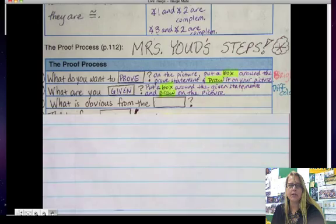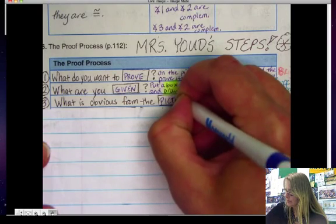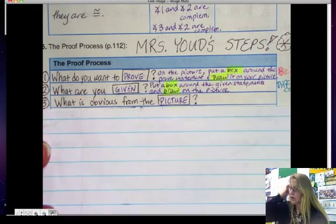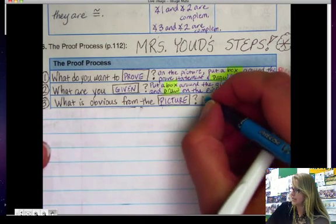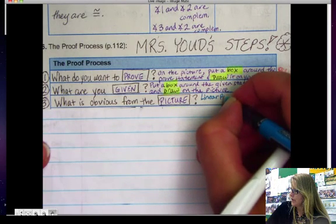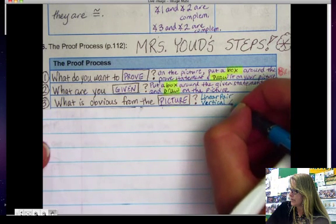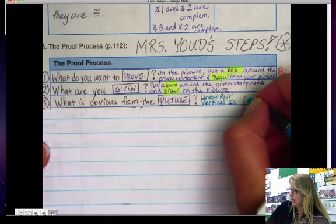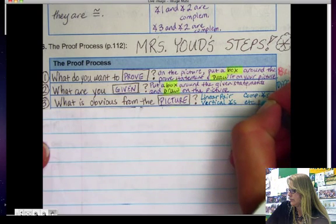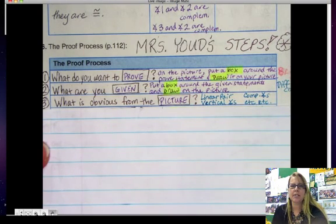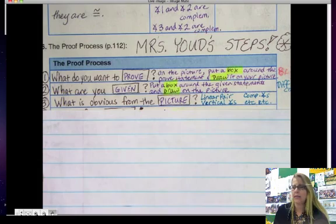Third step is what is obvious from the picture. So with your different color, you need to start drawing things. And what you want to look for is things like linear pairs or maybe vertical angles or maybe complementary angles, etc. So you need to look at your picture and see is there something that's on the picture that can give you a clue as to how to write the proof.